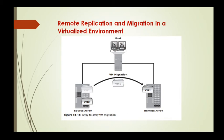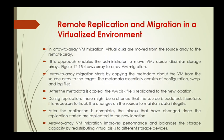After the metadata is copied, the virtual machine disk file is replicated to the new location. During the replication process, there is a chance that the source may get updated. Therefore, it is necessary to track the changes on the source in order to maintain data integrity, so that whatever is happening at the source the same data is available at the remote array as well.